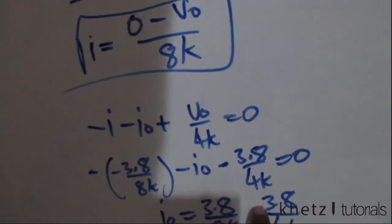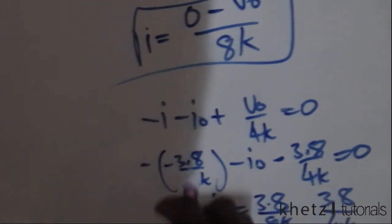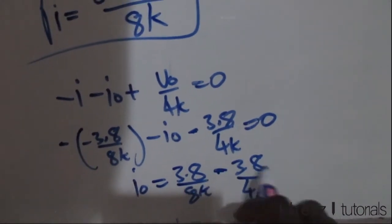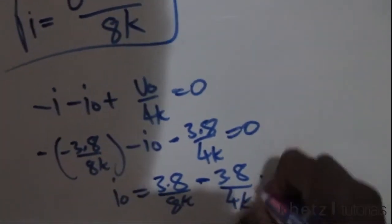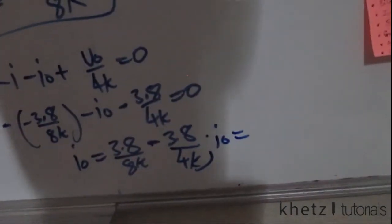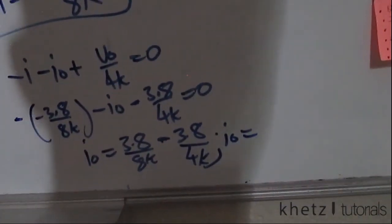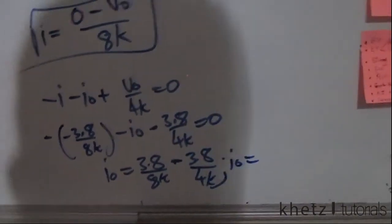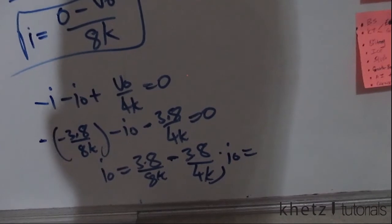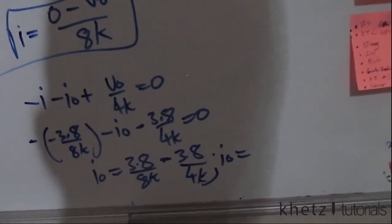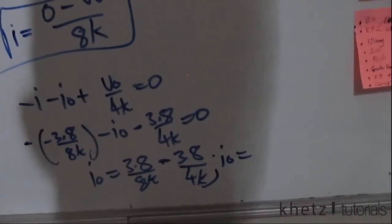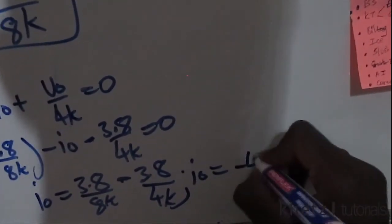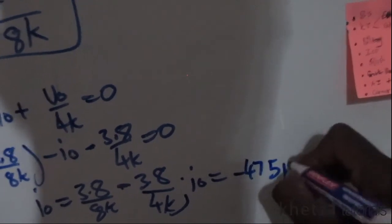So ultimately, io is going to be equals to 3.8 divided by 8k, which is positive, subtract 3.8 divided by 4k. And therefore io is going to be equals to 3.8 divided by 8k subtract 3.8 divided by 4k, and the answer to that is negative 475 microamperes.